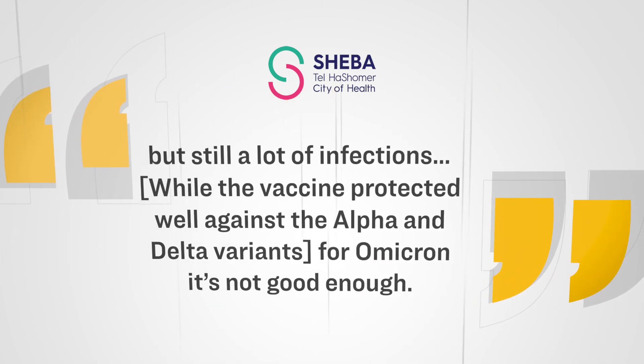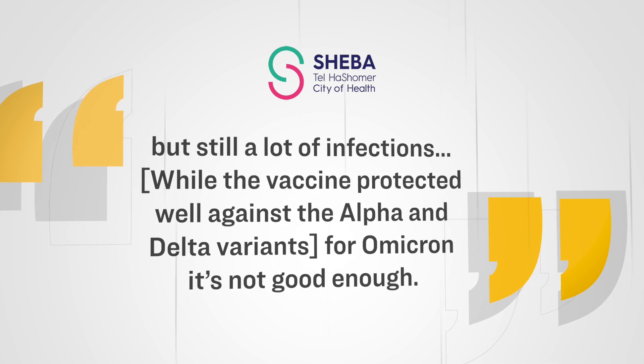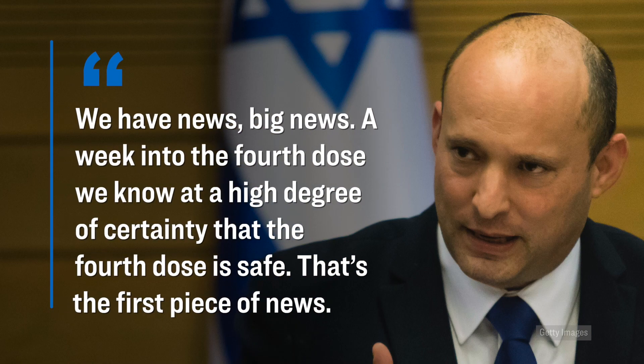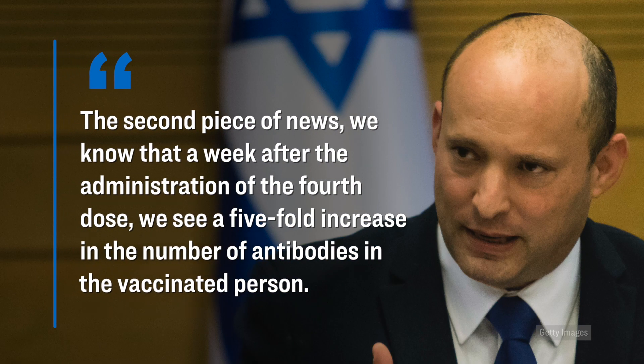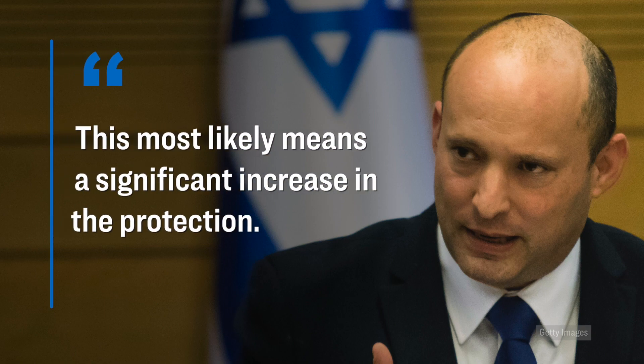However, early data indicated that the first booster dose, it did restore some of the lost protection against infection, but that protection dropped after just several weeks. And so then, the idea was to study the effect of a second booster dose. However, as we mentioned just a moment ago, according to the preliminary results from the Sheba study, well, they are showing a similar trend occurring for the second booster shot as well. Here's again what the lead researcher in the study said in this regard. We see an increase in antibodies, higher than after the third dose. However, we see many infected with Omicron who received the fourth dose. Granted, a bit less than in the control group, but still a lot of infections. While the vaccine protected well against the Alpha and Delta variants, for Omicron, it's not good enough. However, what's ironic here is that earlier this month, and despite the fact that there was very little data on how a second booster dose would actually affect people, well, Israel began to offer a fourth dose of the Pfizer vaccine to both the elderly as well as to healthcare workers.